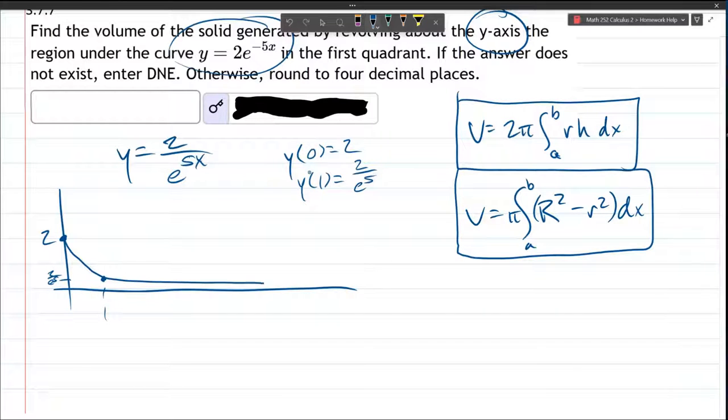So here's what the graph looks like. It does keep going on forever. There is a horizontal asymptote y equals 0. The only question is, does this area get small enough to be a finite amount, even though we're going towards infinity?